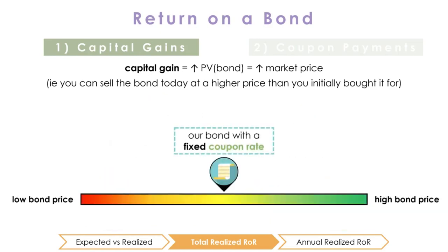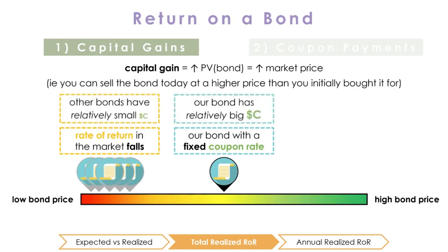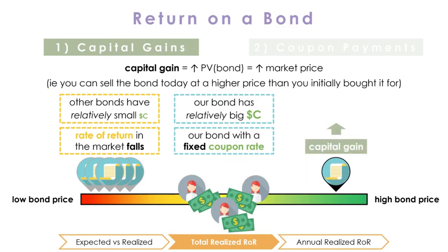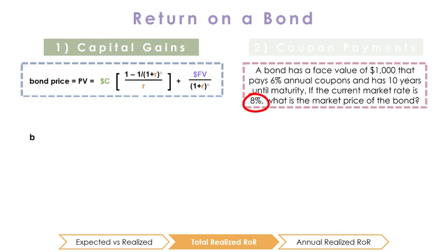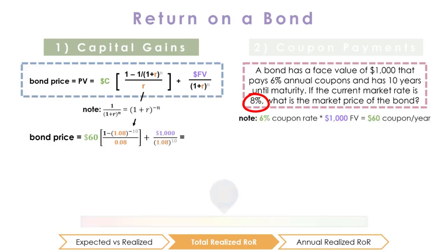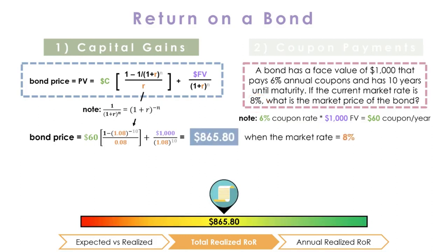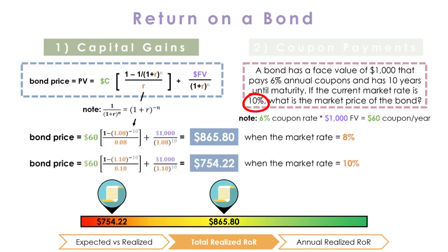You can also think about this from the perspective of the investor. When the market interest rate falls, similar bonds in the market are offering lower returns, which makes the bond's higher fixed coupons more attractive. As investors would rather hold bonds that pay higher coupons, the increased demand will push up the price in the market. For instance, let's take a bond with a face value of $1,000 that pays 6% annual coupons and has 10 years until maturity. If the current market interest rate is 8%, the market price is $865.08. But if the market rate goes up to 10%, the price falls to $754.22, giving the investor a capital loss of $111.58.